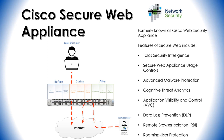The Cisco Secure Web Appliance is a forward proxy that can be deployed in either explicit mode, which uses proxy automatic configuration PAC files or web proxy auto discovery (WPAD) in your browser settings, or in transparent mode using web cache communication protocol (WCCP) or policy-based routing with the use of load balancers.